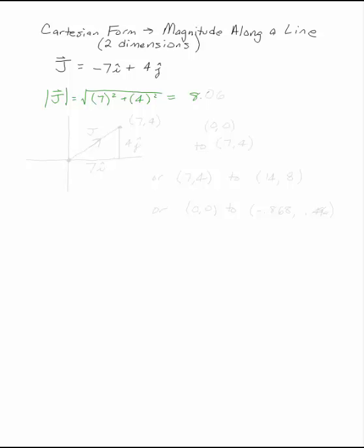That's 8.06. So that's the magnitude. Now we need to find a line that j can lie along. The easiest way to do that is to take the line from the origin and go with the slope equal to the rise over the run.